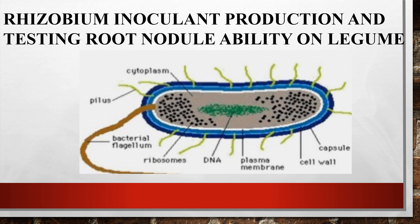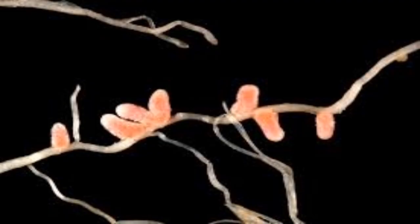Rhizobium is a gram-negative, aerobic, rod-shaped bacterium. It contains refractive granules and is a soil bacterium present in large numbers in the rhizosphere of legume roots. Different species of rhizobium can fix 50 to 100 kg nitrogen per hectare per year in leguminous crops, and therefore have been recommended as nitrogen biofertilizers in agriculture. It belongs to the Rhizobiaceae family. Rhizobium are symbiotic diazotrophs that form an endosymbiotic association with legumes, and they are non-spore-forming bacteria.